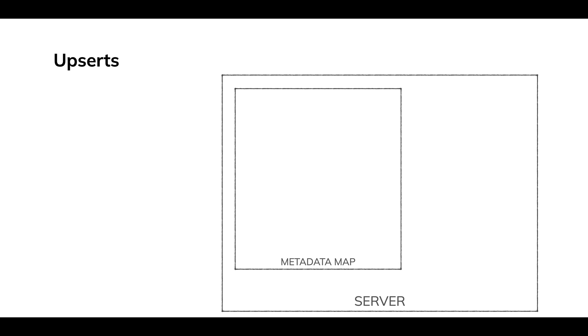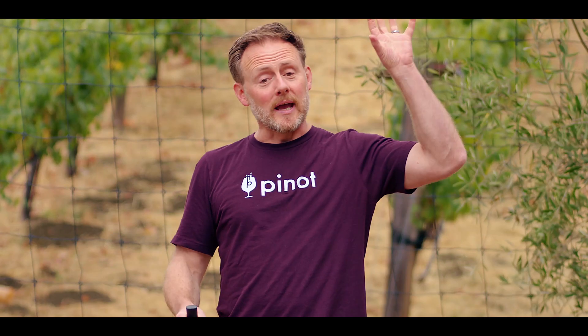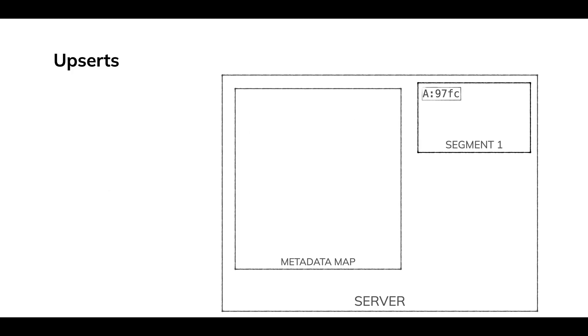We're going to concentrate on a single server here. Upserts fundamentally add a metadata map — that's an in-memory data structure. Let me show you what it does. I'm going to be ingesting streaming data. Here's my streaming data. A number of simplifications to make this work: that 'A' represents my primary key, and those four hex digits — think of that as like a hash of all the rows in the table. This is just a row being ingested. We didn't turn Pinot into a key-value database. This is a regular row, and to do upserts, you have to choose a primary key — I'm representing that as A.